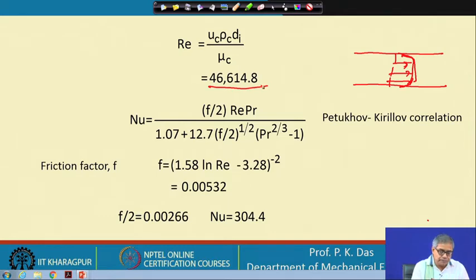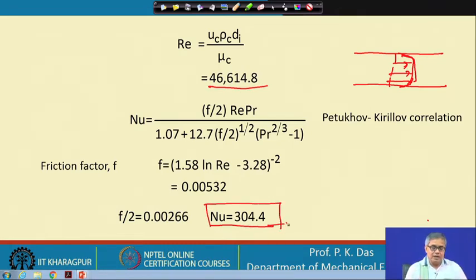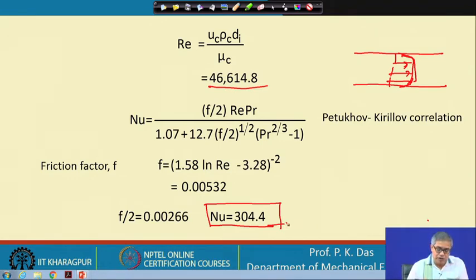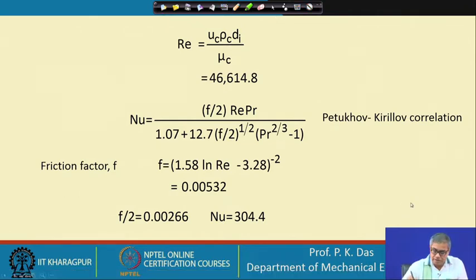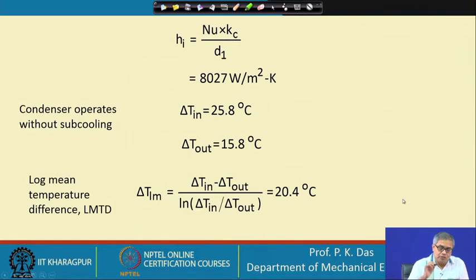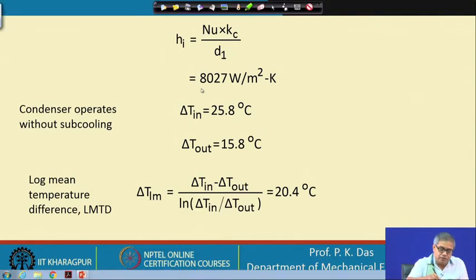From the Petukhov-Kirilov correlation the Nusselt number we can calculate. We go through this — there is not much to explain. We get the Nusselt number, and from the Nusselt number we get the inside heat transfer coefficient h_i.